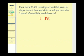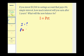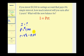If you invest $3,500 in a savings account that pays 4% simple interest, how much interest will you earn after three years, and what will the new balance be? For this situation, we're trying to find I, or the interest. P, the principal or starting amount, would be $3,500. R is the rate of return — 4% expressed as a decimal, so 0.04. And T is time in years, so T is equal to three years.